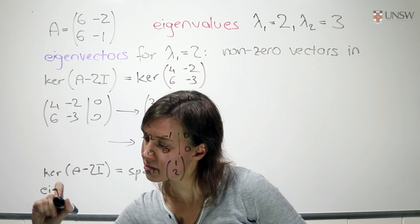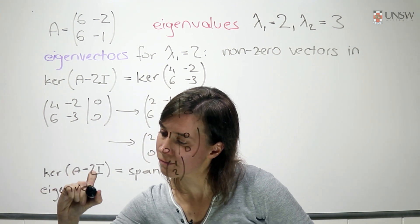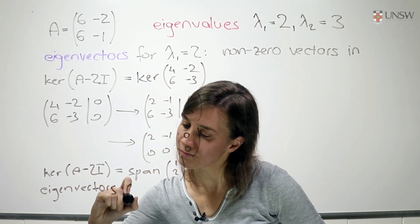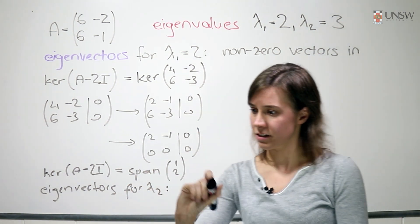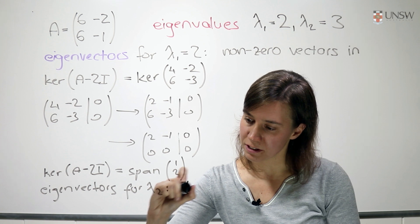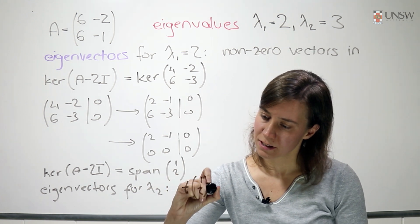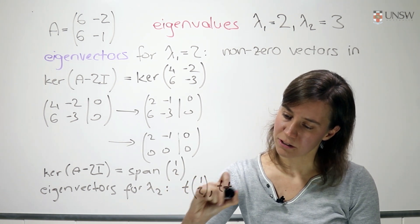So the eigenvectors for lambda 1 equal to 2 are all the t times 1, 2, where t is not 0.